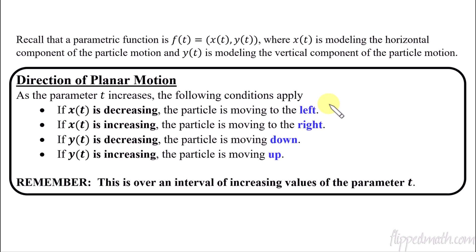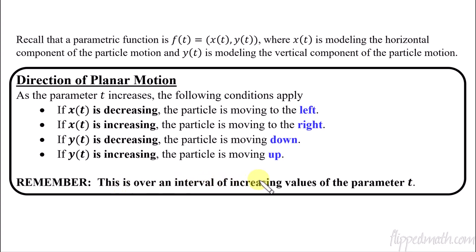If the x values are getting smaller — if they are decreasing — then we know the particle has to be moving left. If x(t) is increasing, then it would be moving to the right. And then y(t): if the vertical component is getting smaller, then we know the function is moving down; if increasing, moving up. We've got to remember that this only applies if we're increasing in t values — the parameter has to be getting larger for us to be able to tell if x(t) is increasing or decreasing, y(t) increasing or decreasing.